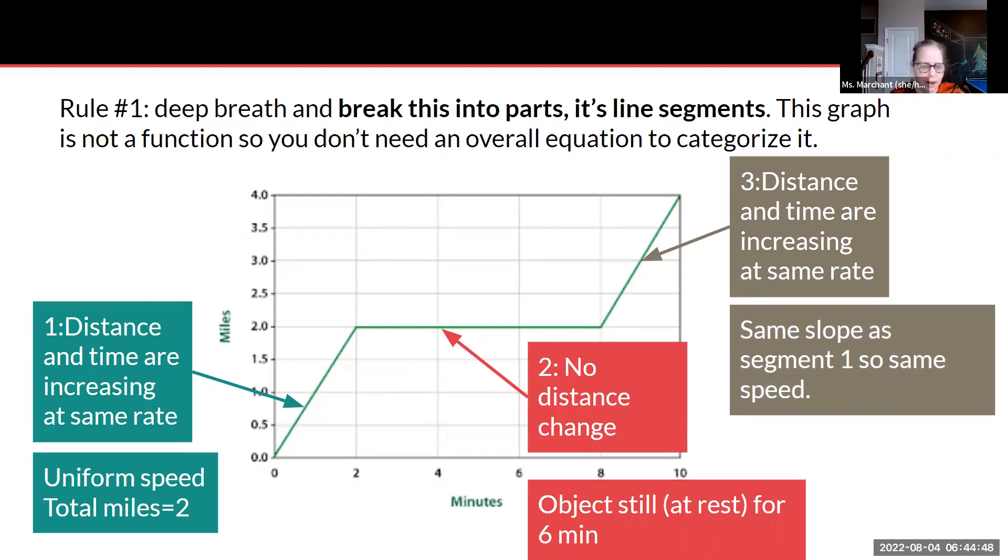And so we know that the first line segment and the last line segment are going at the same speed. So this could be you going on the highway, and then you stopped at the restaurant to get some food and some coffee before you continued on your trip. So we're going further and further away from our origin, and we took a total of four miles for this graph and it took a total of 10 minutes, but only four of those minutes were in motion. So that's how you want to break down all these graphs: just look at each part carefully.